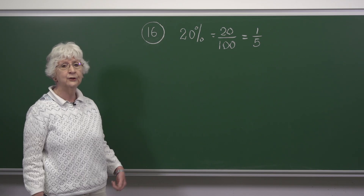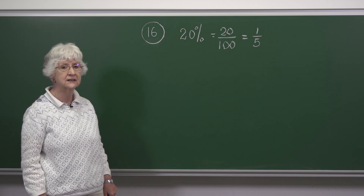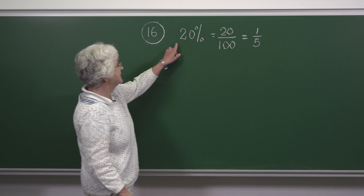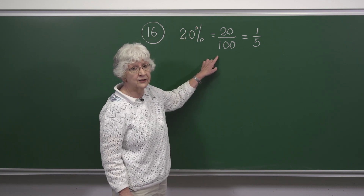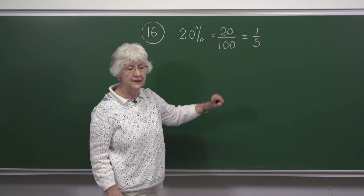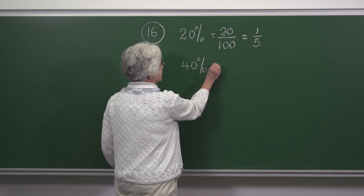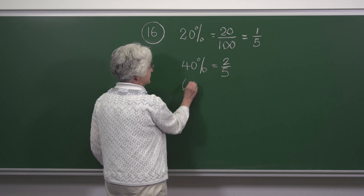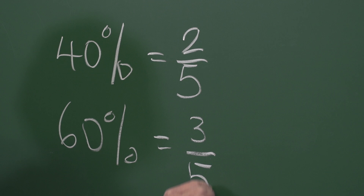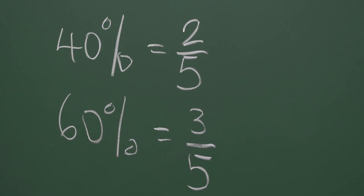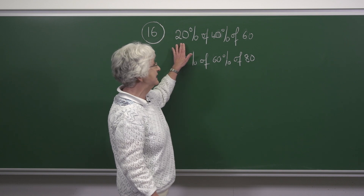In this question we're looking at 20%, 40%, and 60%. We note that 20% is 20 over 100, which is one-fifth, which means that 40% is two-fifths and 60% is three-fifths.